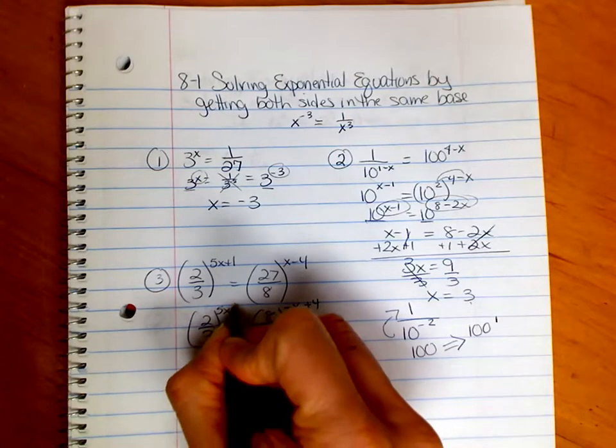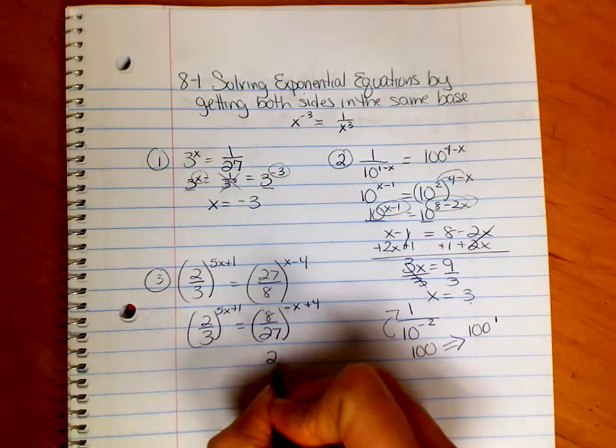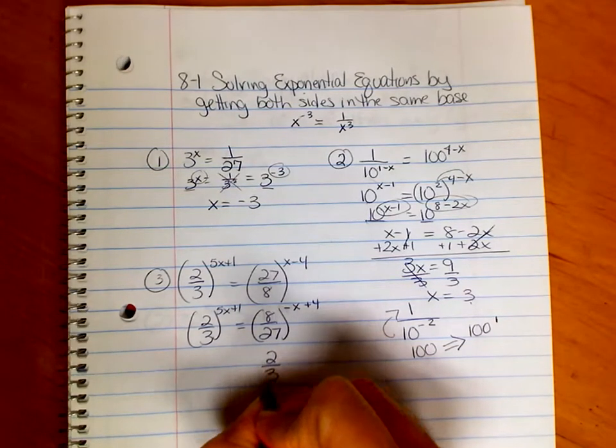Then I can worry about getting the bases the same. So 8 is 2 cubed, and 27 is 3 cubed.